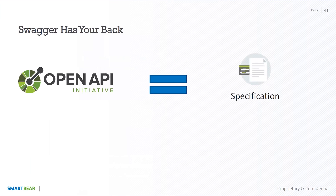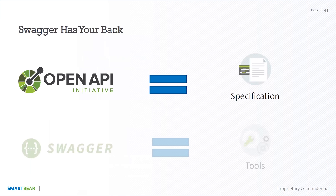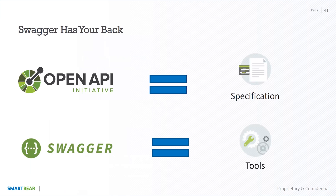We've spoken about OpenAPI, which is the specification — the definition that essentially defines what your API does, which leads to the acceleration of different parts of your lifecycle. Swagger was a market leader in the RESTful world when it created the Swagger specification. We donated it to the OpenAPI initiative and renamed it the OpenAPI specification to standardize it across the world.